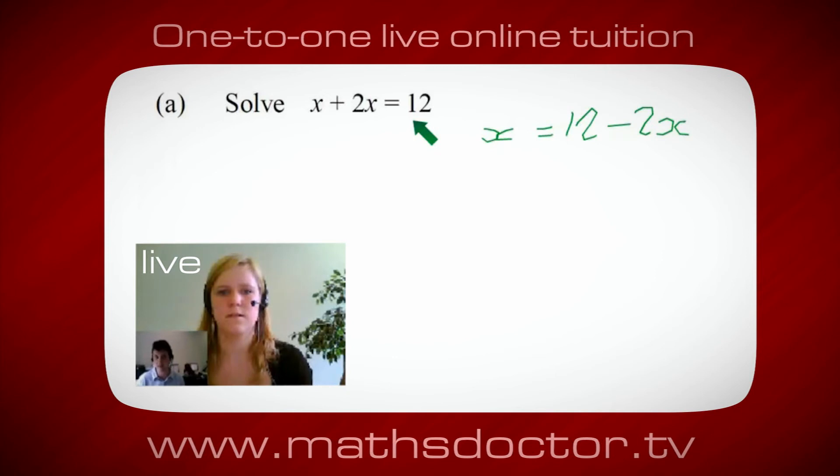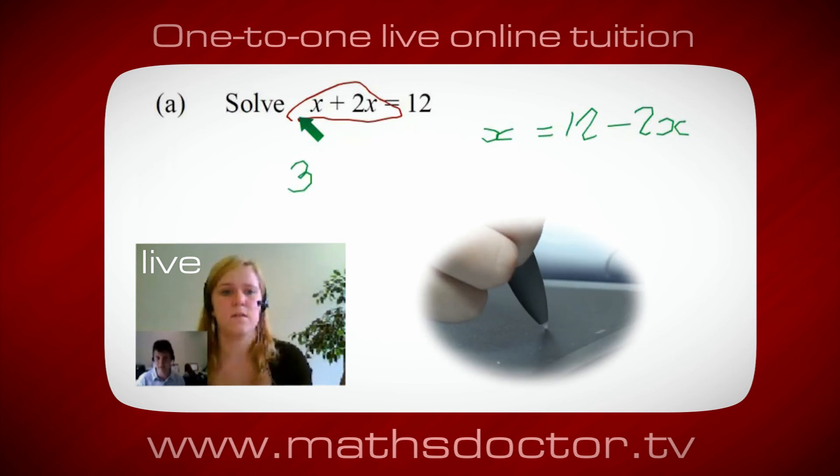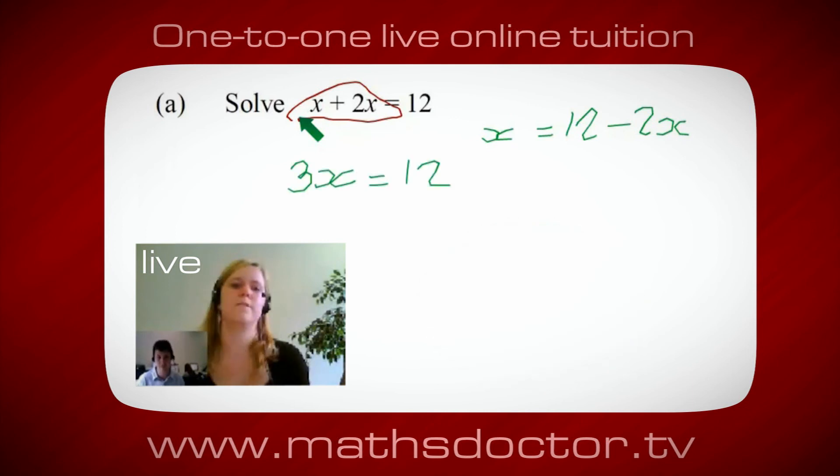Okay, so a lot of time we want to get x by itself, but what we want to do first is get all of these x's together. So can you see anything we can do with this? Get all these together in one place. Oh okay, it's 3x, isn't it? Yeah, absolutely.